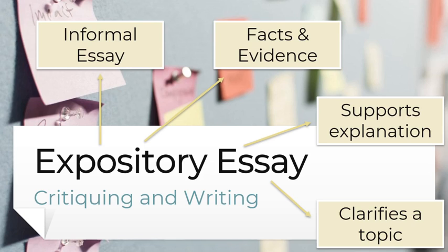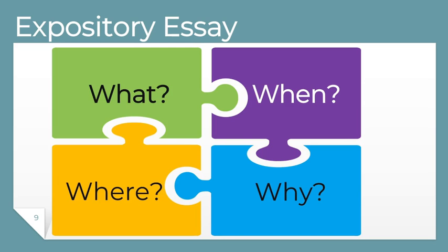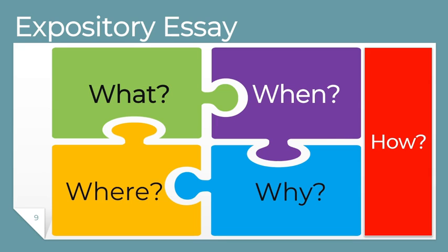We've already discussed what an expository essay is in our previous lessons, and right now we're just having a refresher on the first parts — which aims to explain certain things, facts, and evidences, and to clarify a certain topic. Our topic is about how we can critique and write our very own expository essay. To do that, we need expository techniques. The expository essay relies on the four Ws: what, when, where, why — and one H, which is how.